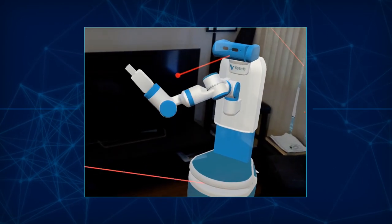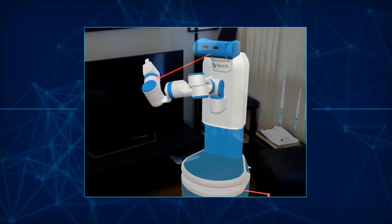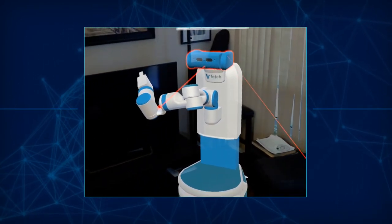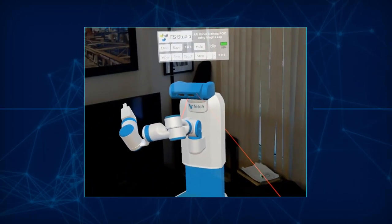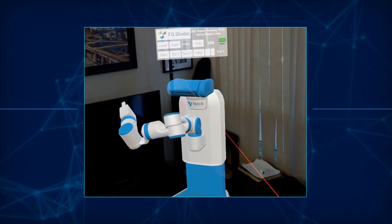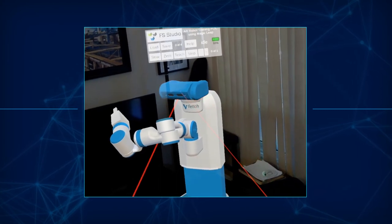They could even use their hands to directly manipulate a virtual robot arm to show the robot what they want it to do. No longer are the machine and the human working in two separate worlds.